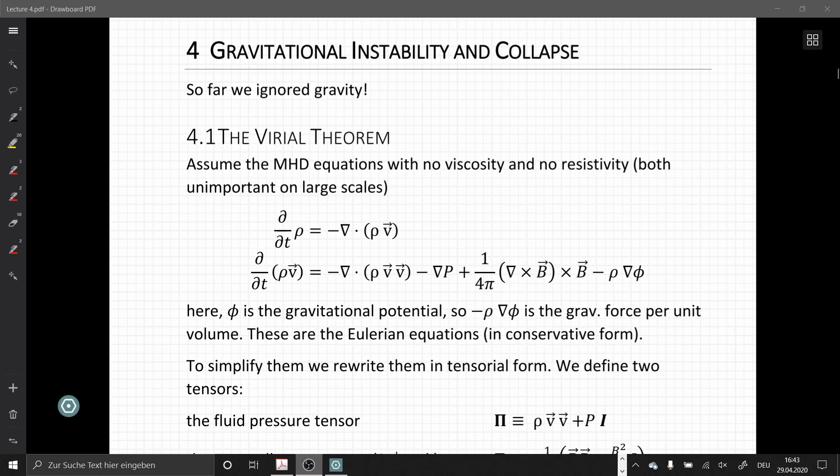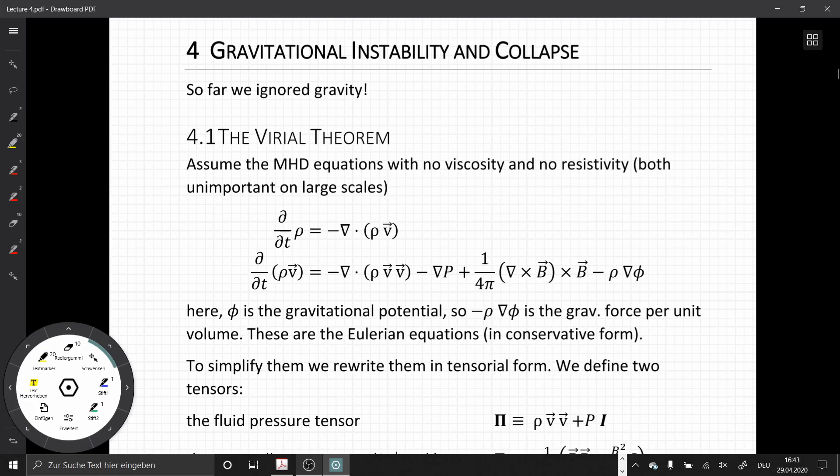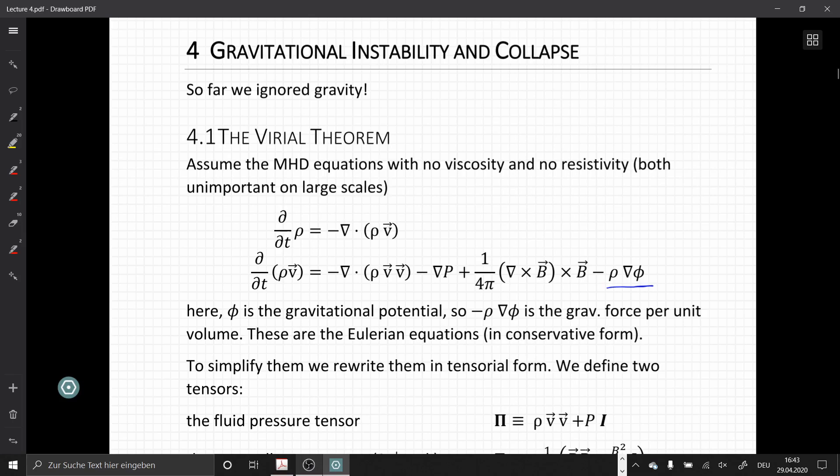Then our MHD equations are the continuity equation, the equation of mass conservation and the conservation of momentum equation. And in the second equation we have here an additional term describing the strength of the gravity. Phi is the gravitational potential. So minus rho nabla phi is the gravitational force per unit volume. These are the Eulerian equations in their conservative form.